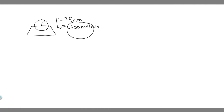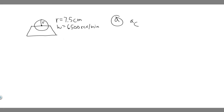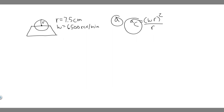Let's start with part A. We're trying to find the centripetal acceleration. The formula for it is A sub C equals omega squared times R, which is the formula you use to solve for centripetal acceleration.